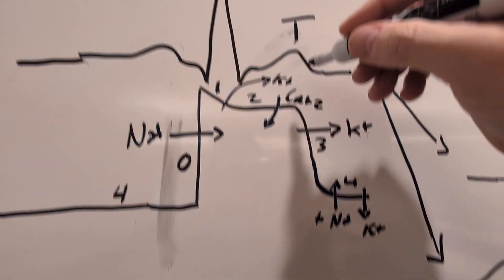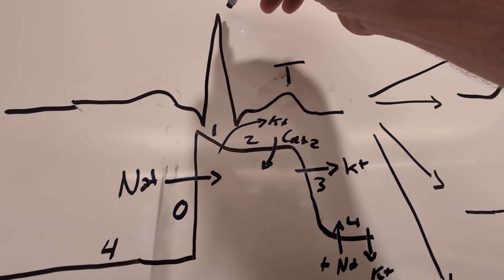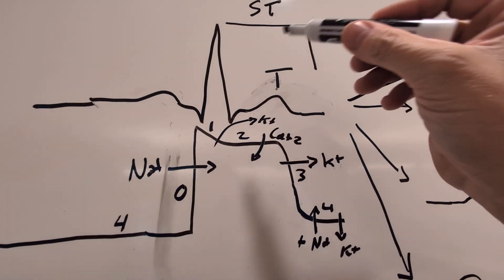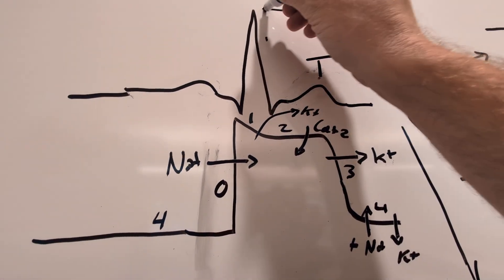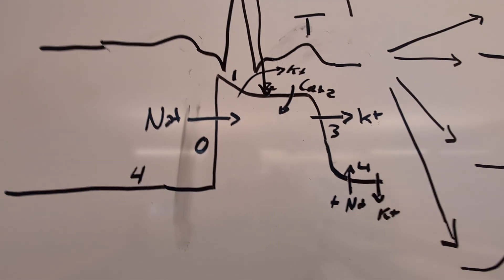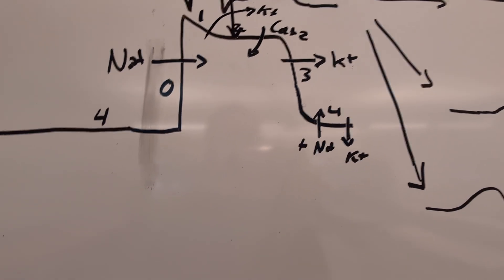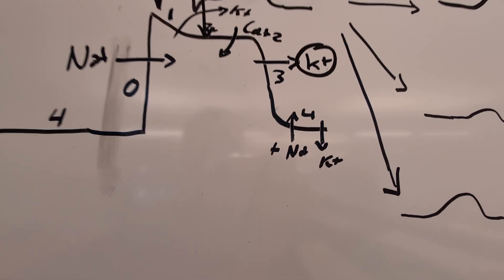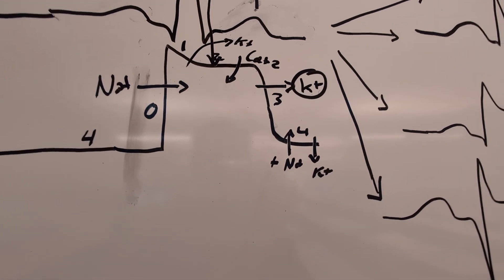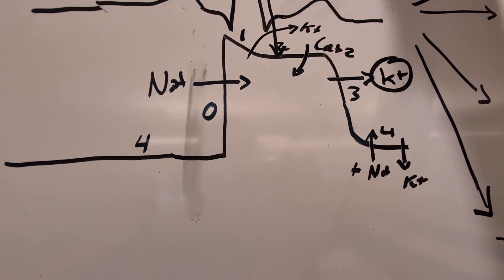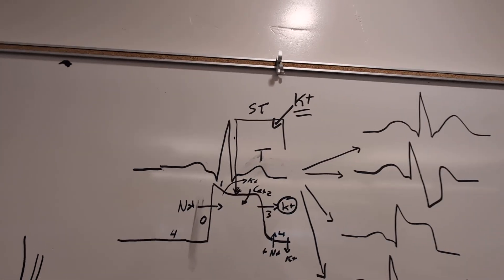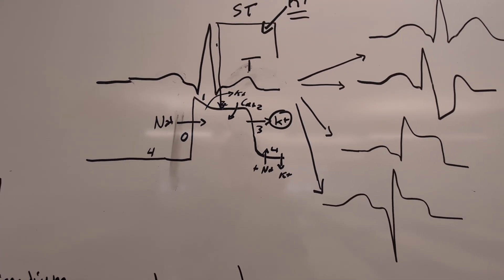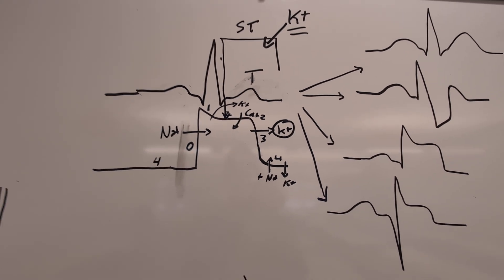So it's important to understand what ions are moving in the action potential. When we look at the T wave and the ST segment specifically and the J point, we're primarily looking at repolarization. One of the most important ions in terms of repolarization is the movement of potassium — out of and then ultimately back into the cell. The flow of potassium is very important when it comes to the ST segment. That is some important foundational material for us to understand.